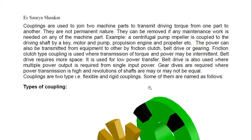Couplings play a very important and critical role. Whenever you are joining two components you need this coupling. A machine part example: a centrifugal pump impeller is coupled to the driving shaft by a key. Motor and pump, propulsion engine and propeller, etc. Power can also be transmitted from one equipment to another by friction clutch, belt drive, or gearing. Friction clutch type coupling is used where transmission of torque and power may be intermittent. Belt drive requires more space and is used for low power transfer.